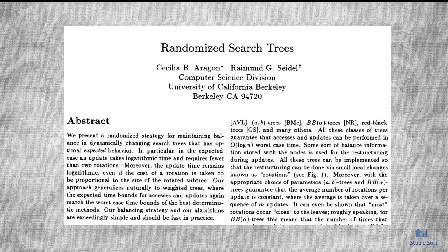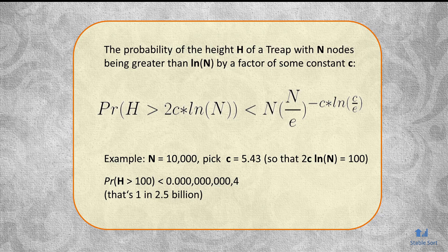Aragon and Seidel, in their 1989 paper called Randomized Search Trees, show that while there is no hard guarantee that the resulting tree will be balanced, the probability of the height of a treap with n nodes being greater than natural log n by a factor of some constant c is bounded by a specific formula. To get a sense of what this means: for a treap with 10,000 nodes, the probability that the height of the tree will be greater than 100 is 1 in 2.5 billion.